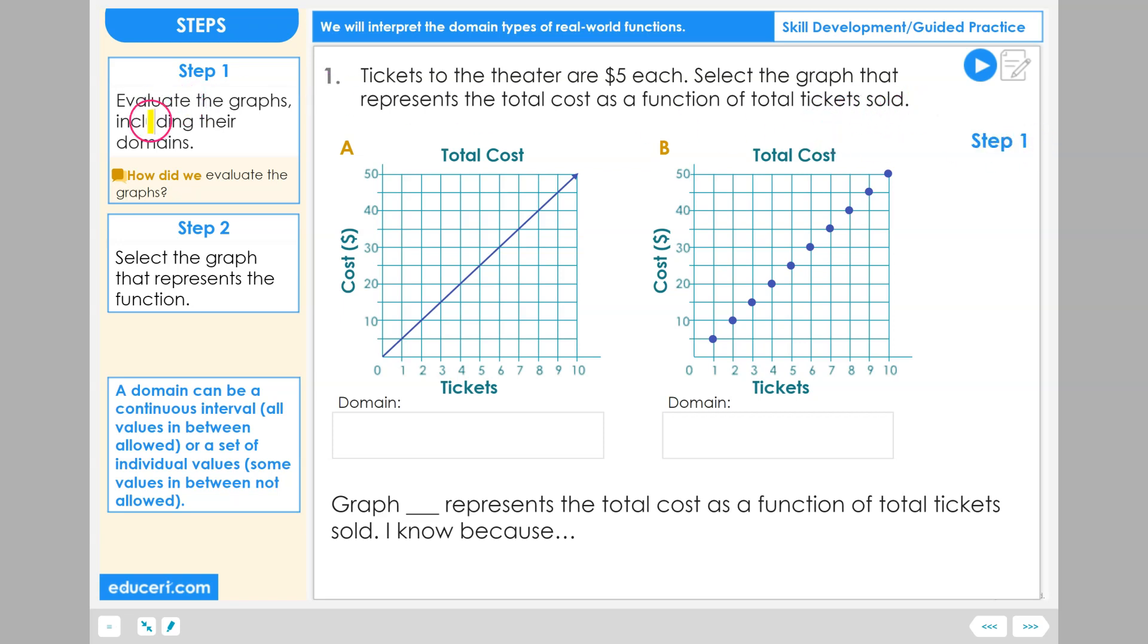Step one. Evaluate the graphs, including their domains. Graph A and B have some similarities. They both are called the total cost graph. The input value is tickets, and the output value is cost in terms of dollars.